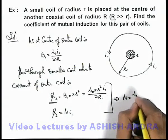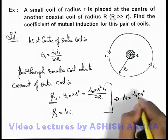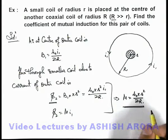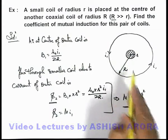then by comparing these relations you can see we are getting M is equal to mu-not pi r square by 2R that will be the coefficient for mutual induction for the pair of these 2 coils.